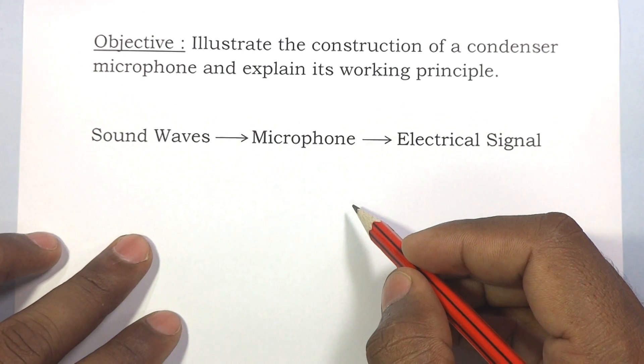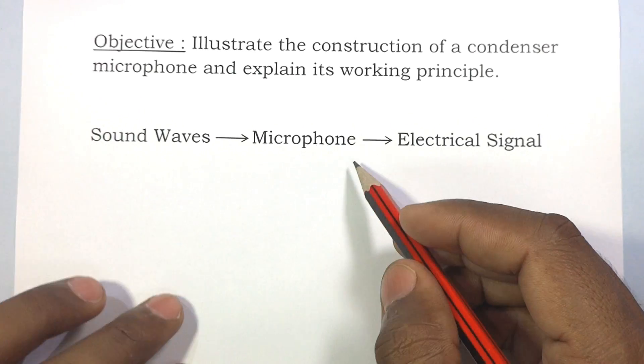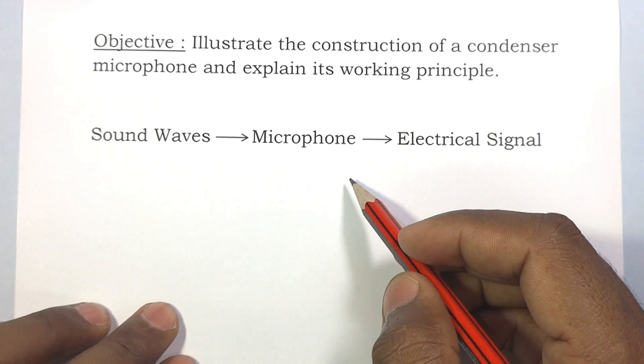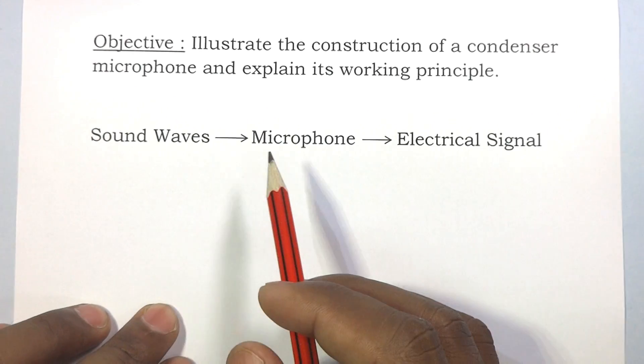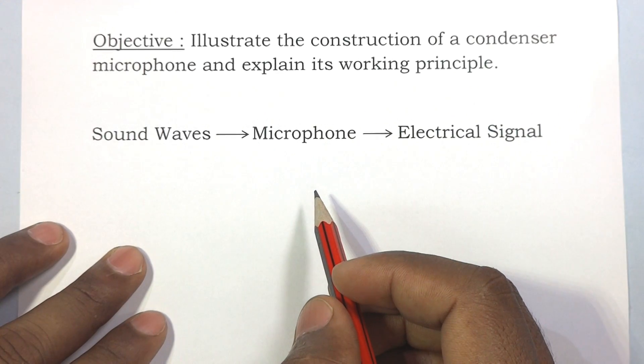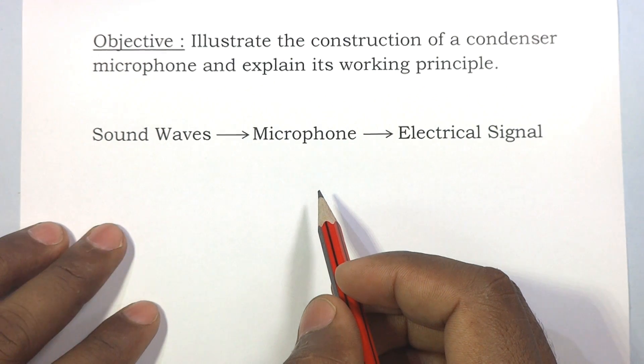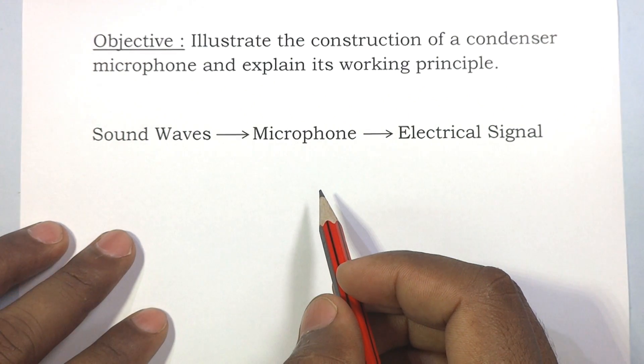Today I will describe the construction and working principle of a condenser microphone. Basically, a microphone is a transducer which converts sound signals into electrical signals. The objective of this tutorial is to illustrate the construction of a condenser microphone and explain its working principle.